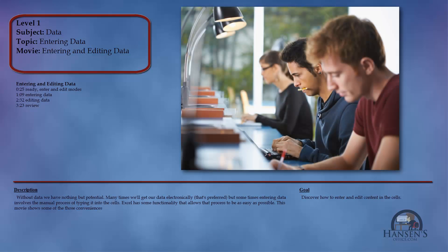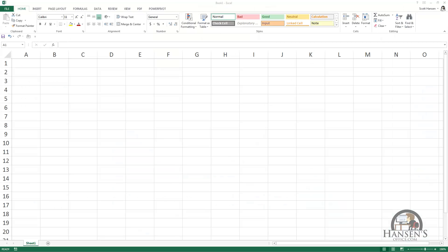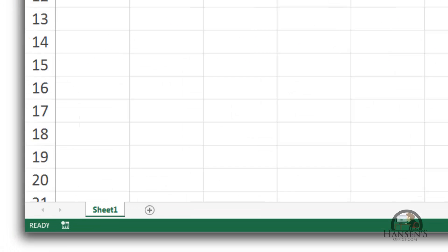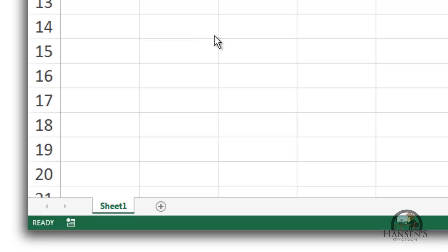We're going to talk about entering data and editing data — two things you'll do a lot of in Excel. Along those lines, there are three modes of the worksheet: the ready mode, the enter mode, and the edit mode. We're in Excel now and the worksheet is in the ready mode. I know this because the status bar is telling me. I'm going to select a cell and make it the active cell.